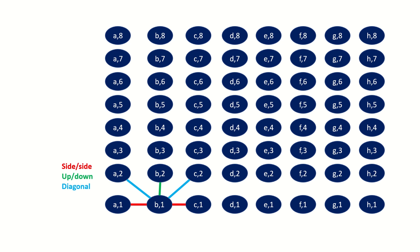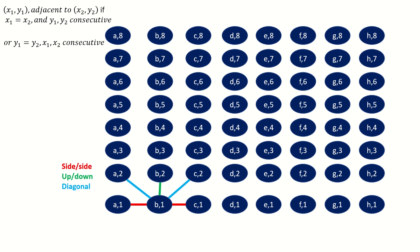If a king's graph is to capture the structure of the legal moves of a king on a chessboard, any two vertices defined by an ordered pair (x1, y1) and (x2, y2) — where x's are their column letters and y's are their row numbers — will connect if they have the same column letter and consecutive row numbers, that is x1 equals x2 and y1 and y2 are consecutive numbers, or if they have the same row number and consecutive letters, that is y1 equals y2 and x1 and x2 are consecutive letters.